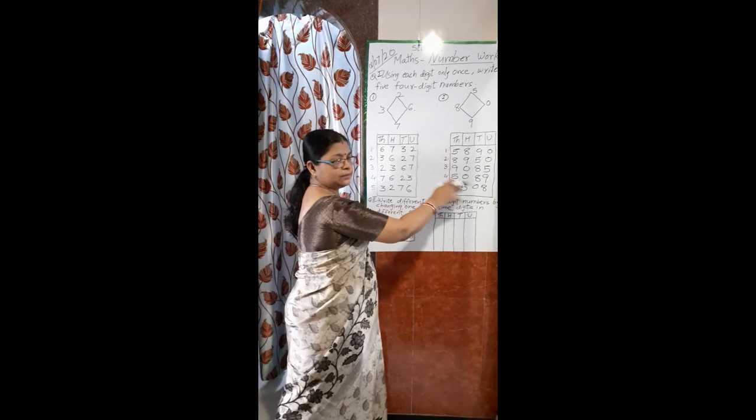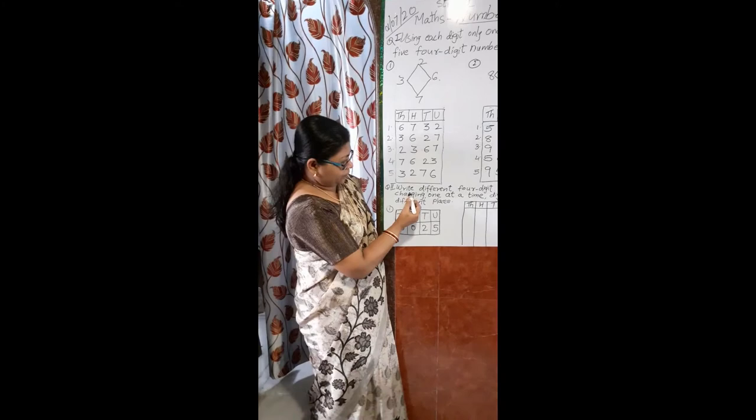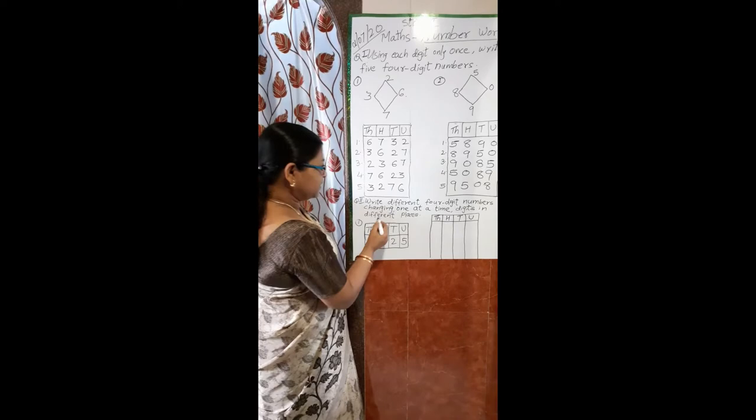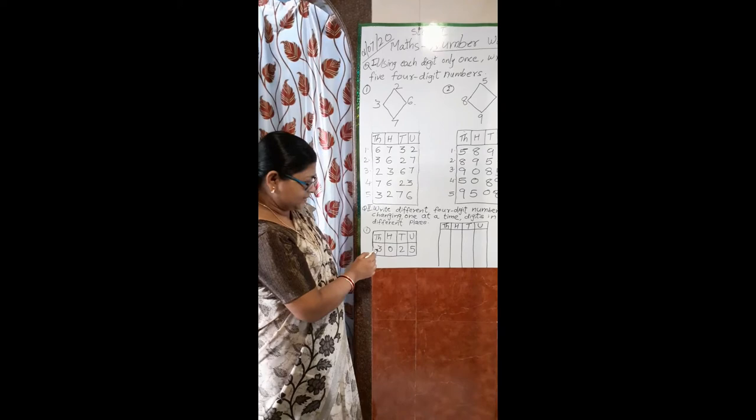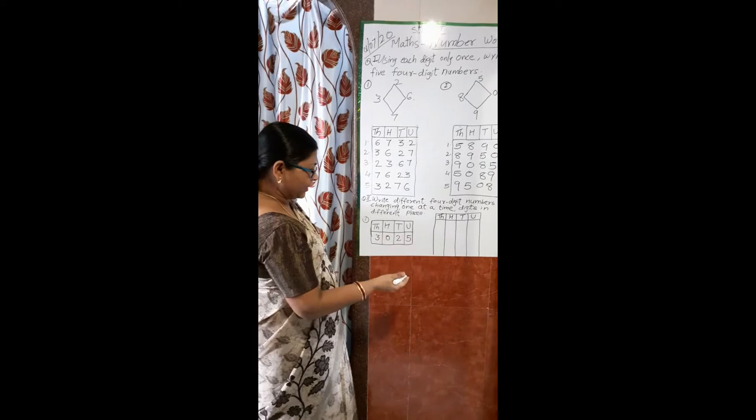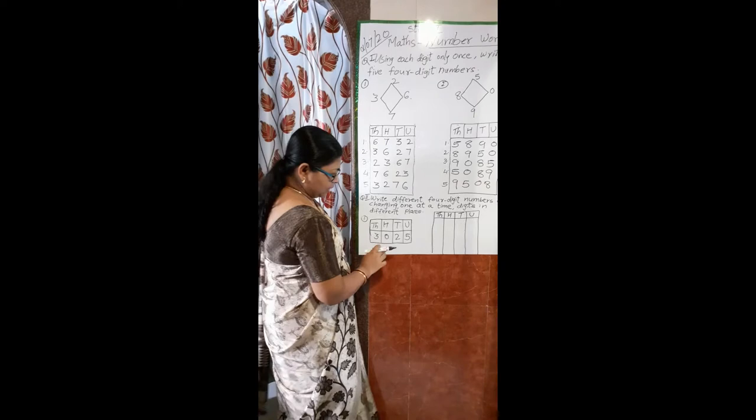Next, I'll explain writing different four-digit numbers by changing one digit at a time in different places. You can see the columns: in the units place 5 is given, tens place 2 is given, hundreds place 0 is given, and thousands place 3 is given. We have to use only these digits, but in a different way. Remember, zero will not come in the thousands place.